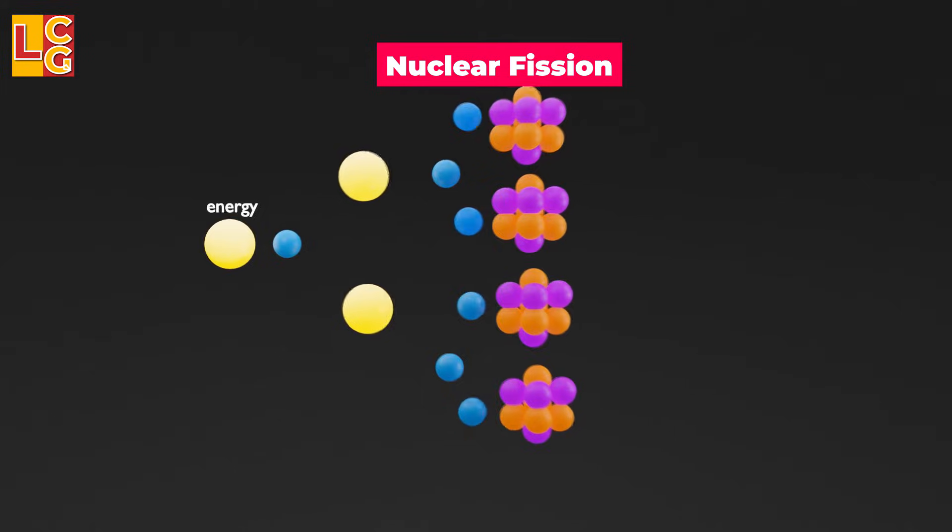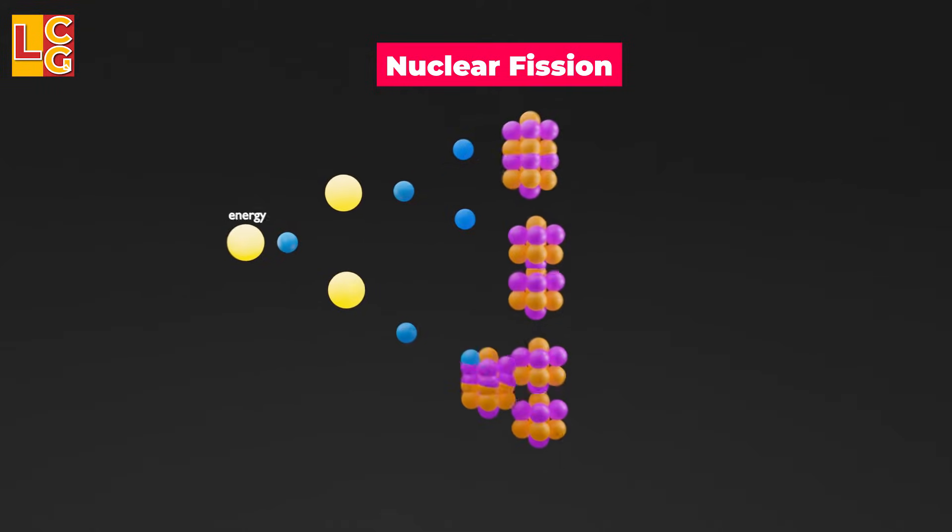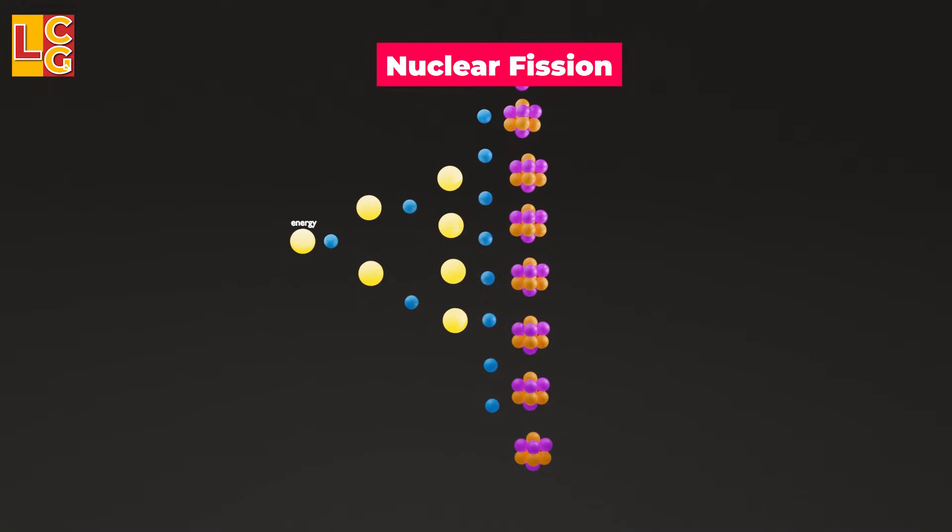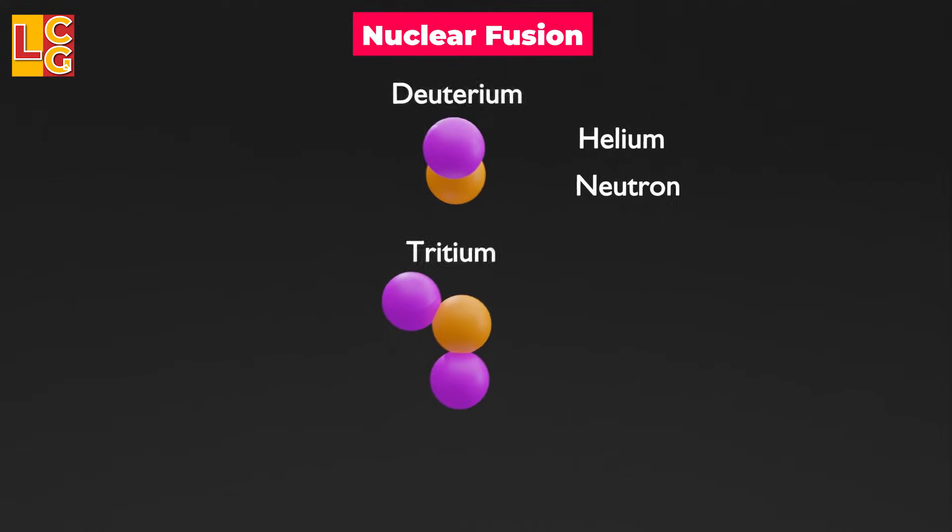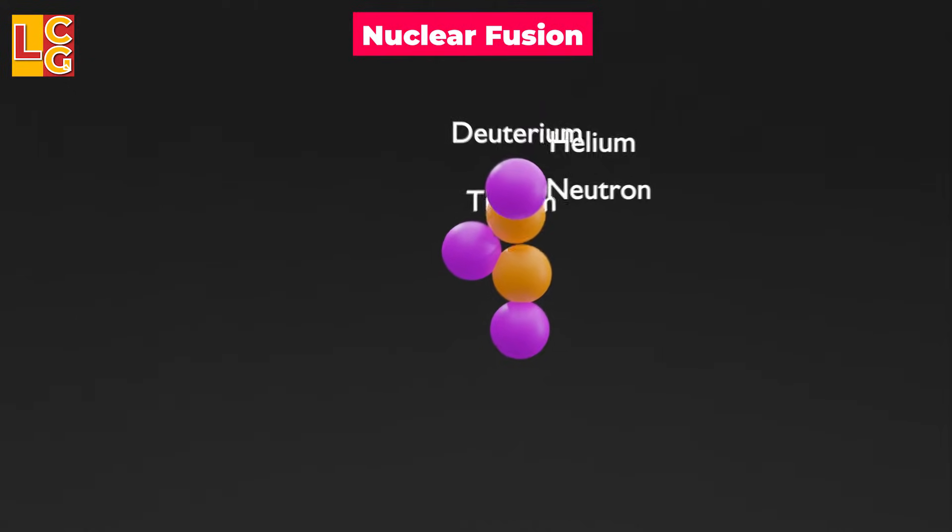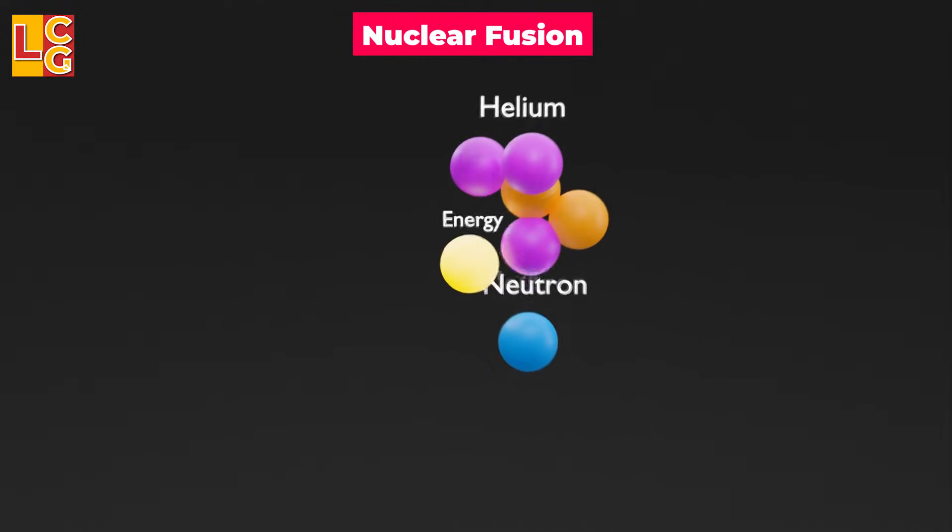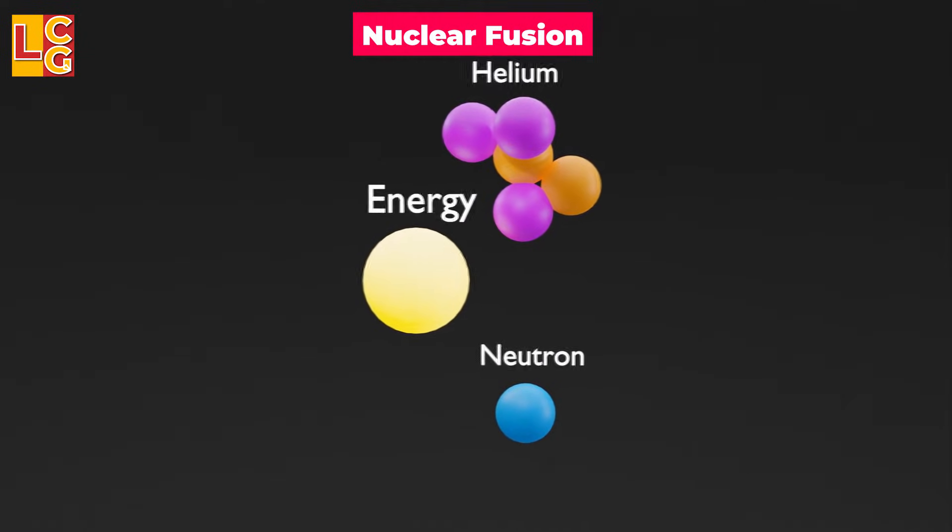These neutrons can also hit other uranium atoms, therefore continuing the splitting, hence the term fission chain reaction. On the other hand, nuclear fusion is the opposite as atomic nuclei are combined instead of splitting them. Nuclear fusion also releases neutrons and energy.